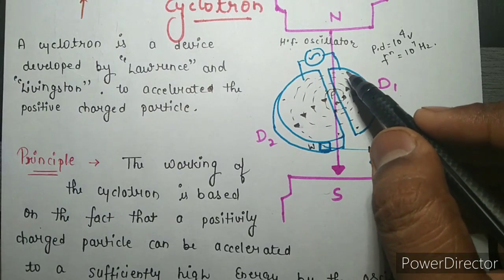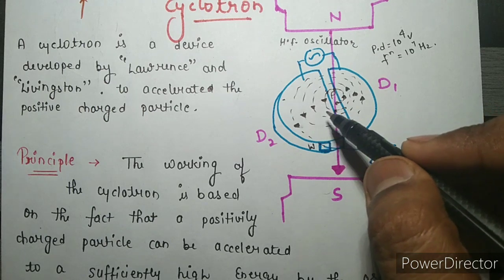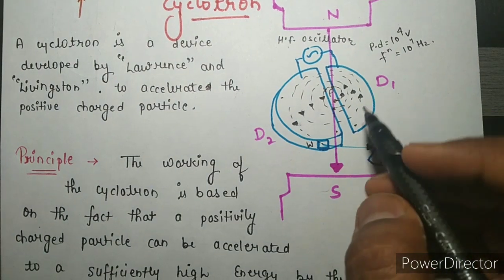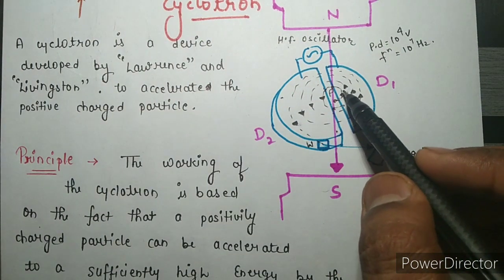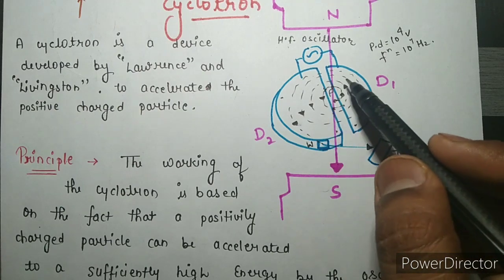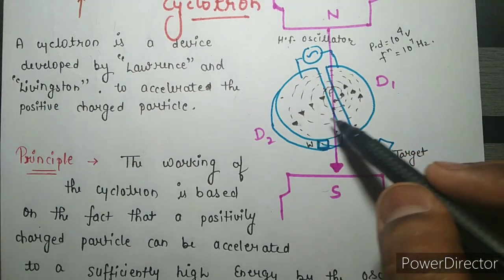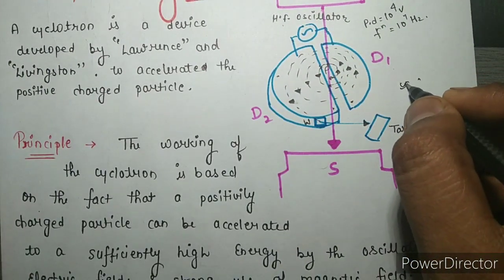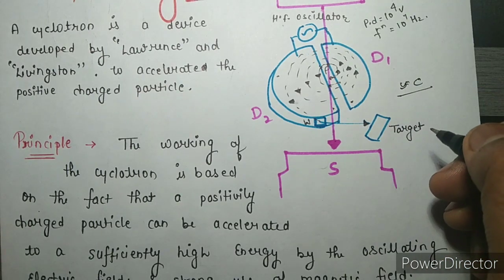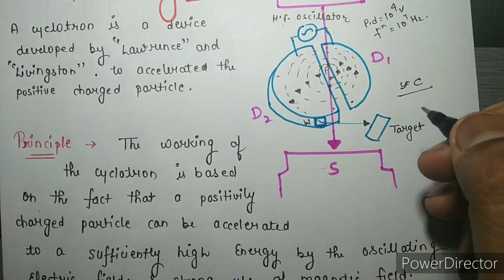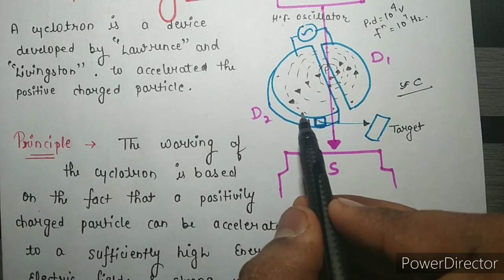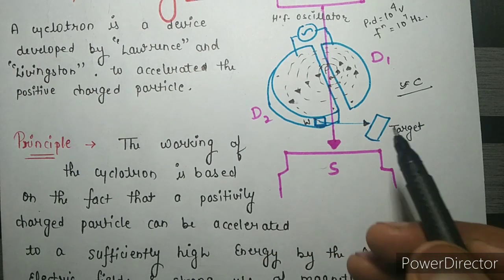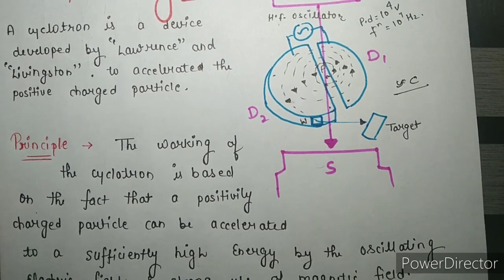After entering from one dee to the other, the particle moves with higher velocity and with a larger radius of circle. The velocity keeps increasing in order, and the particle attains a very large velocity approaching the speed of light, c — which is our aim. After achieving that velocity, the charge particle exits from the window of the dee and collides with the target. This is the basic working principle of the cyclotron.